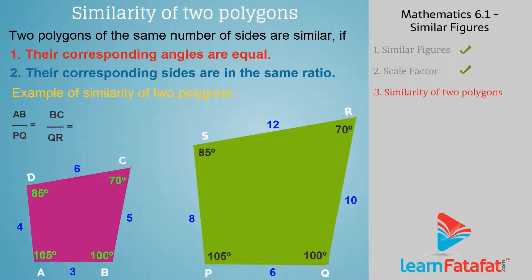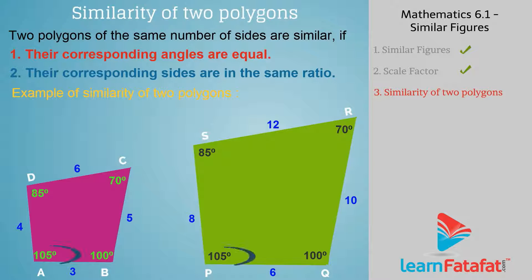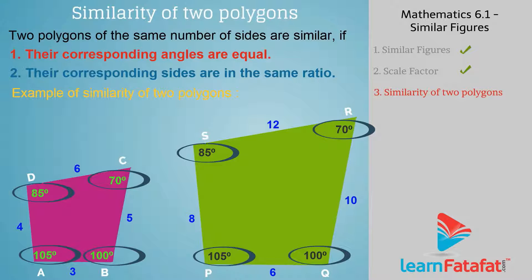Example of similarity of two polygons: quadrilaterals ABCD and PQRS are similar since the ratio of sides AB divided by PQ, BC divided by QR, CD divided by RS, and DA divided by SP is the same — that is, 1 divided by 2 — and angle A equals angle P, angle B equals angle Q, angle C equals angle R, and angle D equals angle S.